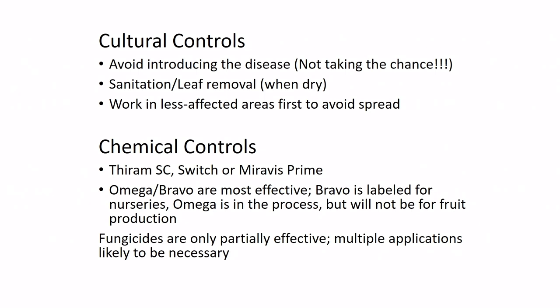Regarding chemical choices, efficacy trials showed Thiram, Switch, or Merivon Prime are the best fungicides tested for disease control. But these are not completely effective — only about 40% control efficacy — so you'll likely need to spray more frequently. Omega and Bravo are even more effective than Thiram or Switch, but unfortunately Bravo is labeled for nurseries only, and Omega is currently in a registration process and will also only be available for nurseries, not fruit producers.